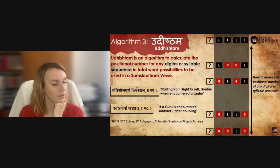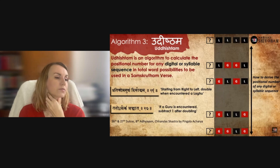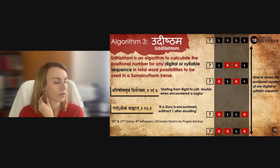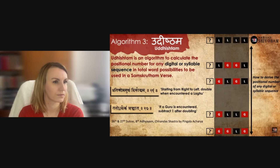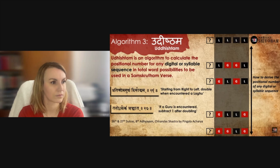The third algorithm by Maharshi Pingalacharya is called Udhishtam — the converse of Nastam. In this algorithm, you have the syllable sequence and you calculate the position where it fits in the entire list of possible word combinations. For instance, where does laghu-laghu-laghu-laghu sit in the sequence for a four-lettered word? The 26th and 27th sutras of the 8th Adhyayam of Chandash Sastram elaborate Udhishtam: an algorithm to calculate the positional number for a given syllable sequence in the total word possibilities.